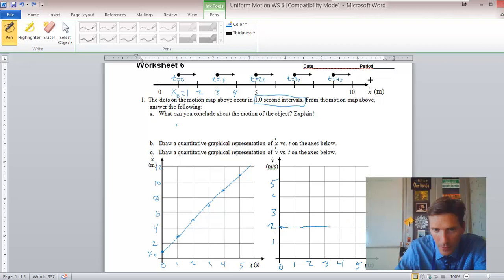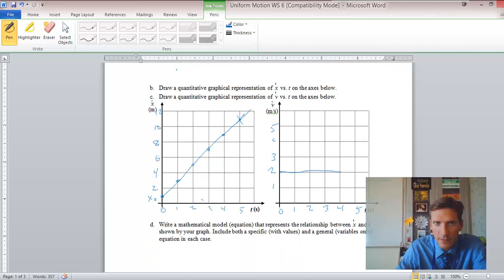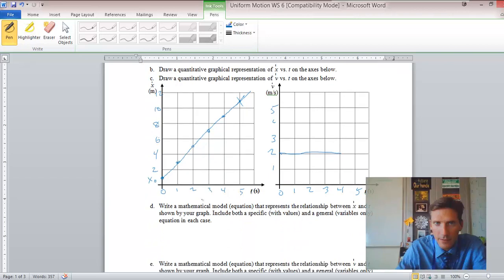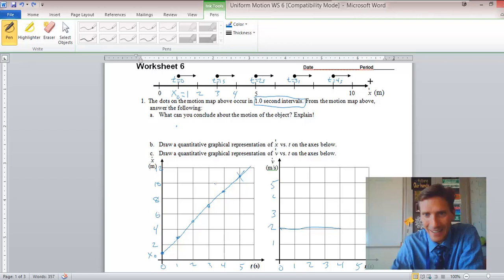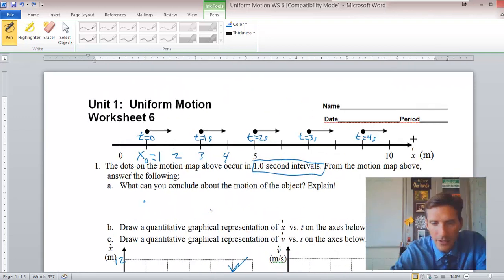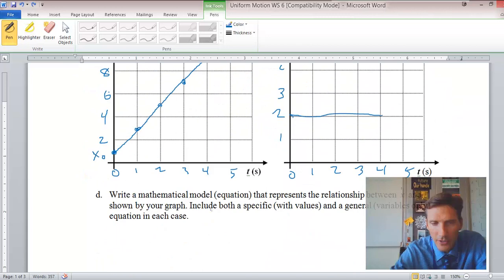Now, write a mathematical model equation. This is part D that represents the relationship between X and T shown by your graph. Include both a specific with values and a general variables only equation in each case. So I want to remind you that we're looking at lines. And that means we're going to have some equation of the form Y equals MX plus B, because this is the general equation for a line. But I'm going to put it in parentheses because this is the generic math version.